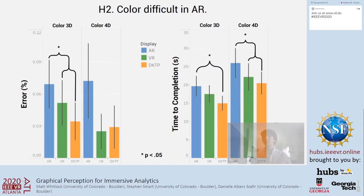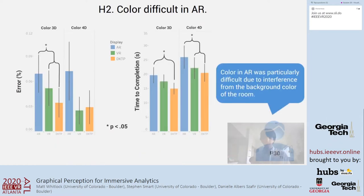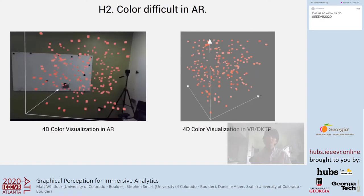Second, we thought that color-based visualizations would be challenging in AR, and we found that to be the case. Participants were typically less accurate and slower in AR than on the desktop and in VR. We anticipate this was likely due to the non-constant background, as participants specifically called out that color in AR was particularly difficult due to the interference from the background color of the room. Here's an example of this using color in AR and what it would look like in VR or on the desktop — you can clearly see the interference from the background.